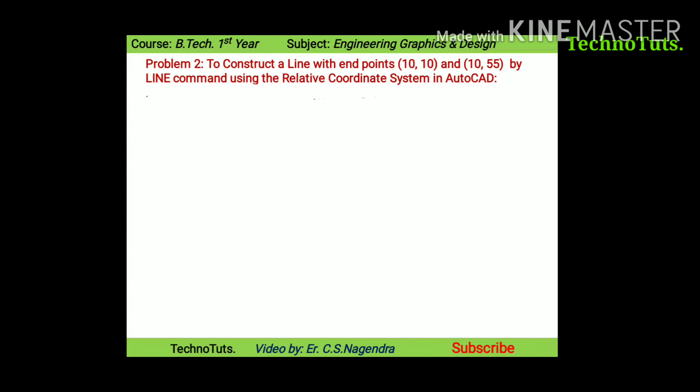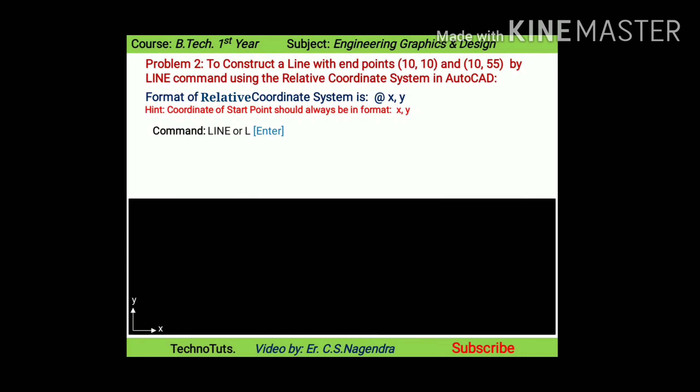The format used in the absolute coordinate system is X comma Y. The format used in the relative coordinate system is @X comma Y. The hint remains the same as the previous question: whenever we mention the start point, we write it in X comma Y format. Type 'line' in the command prompt and press Enter. The viewport will get activated and the computer will ask you to specify the start point — type 10 comma 10 and press Enter.